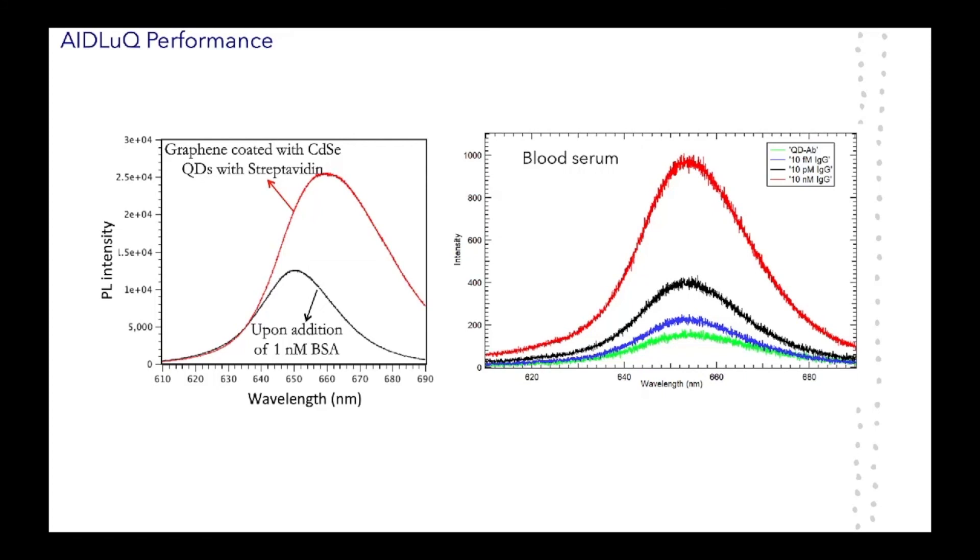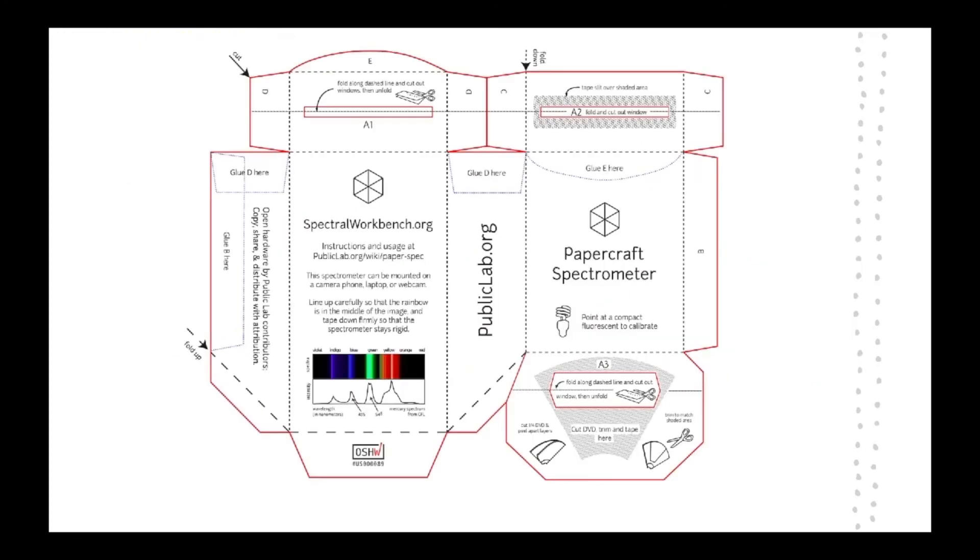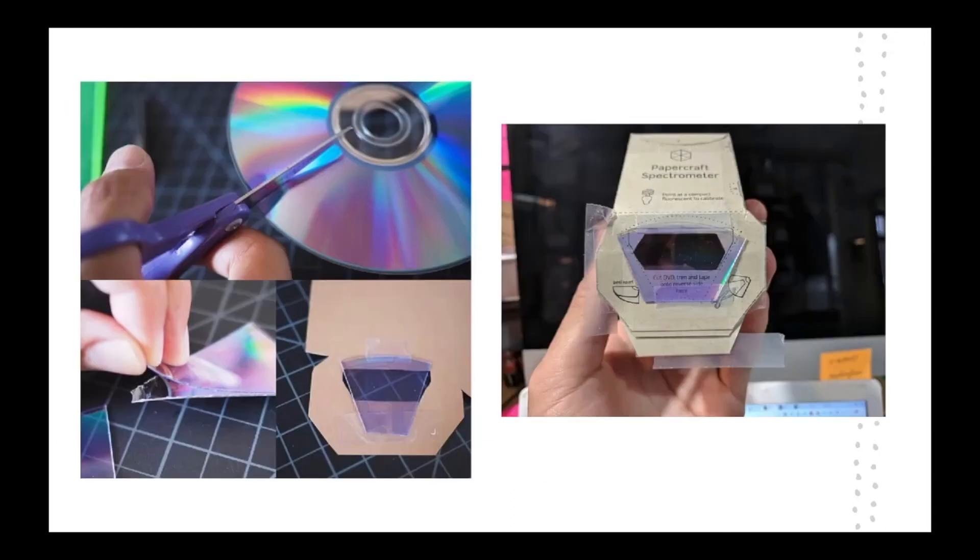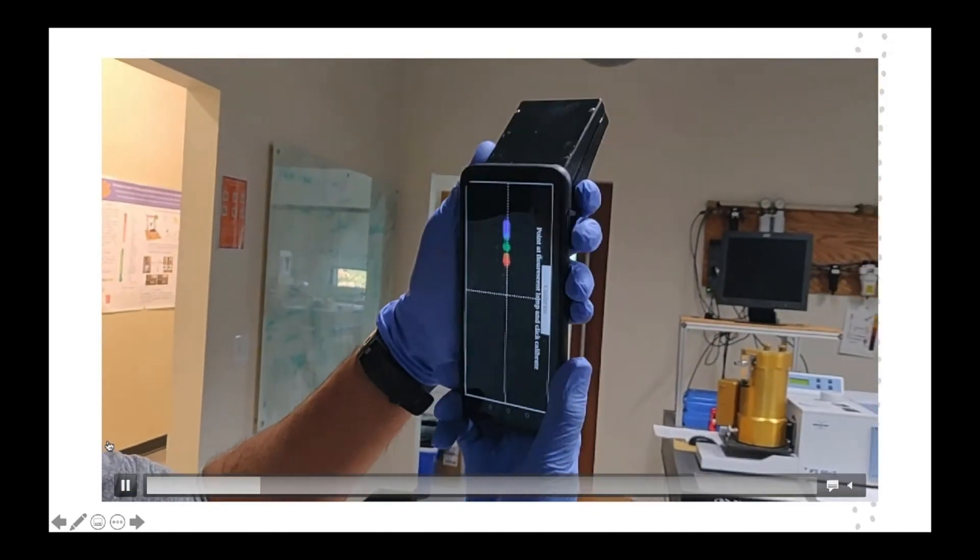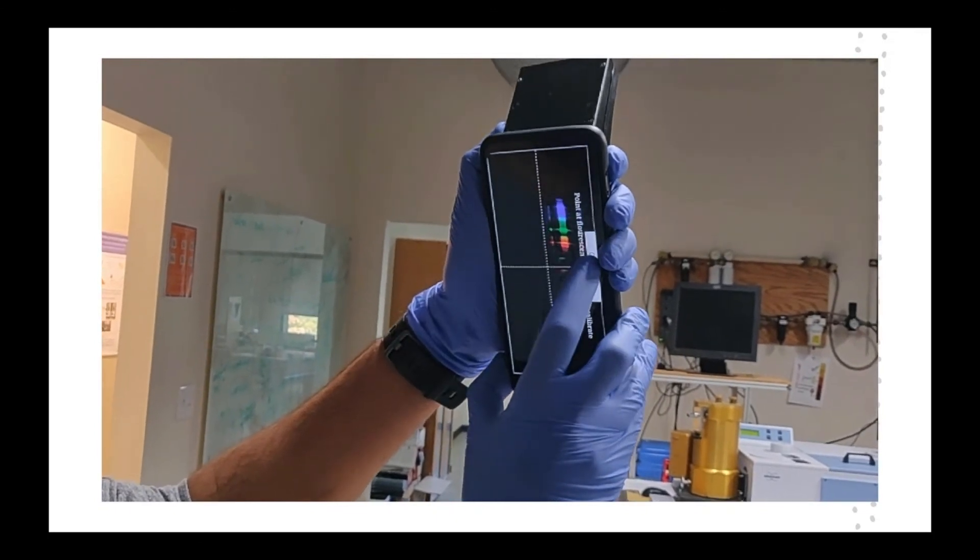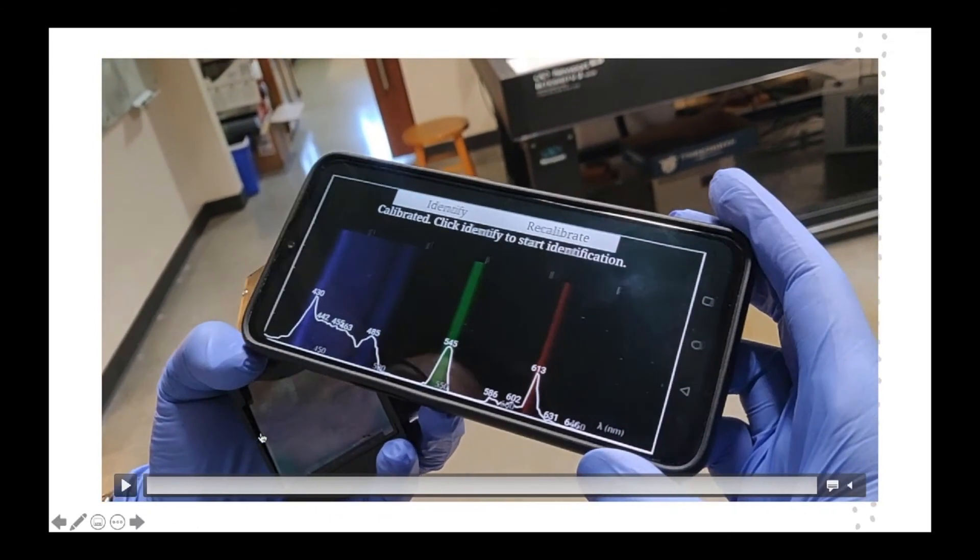We also tested this in a complex environment like the blood serum. Our platform was able to selectively and sensitively detect IgG even in a complex environment like the blood serum. Now, how can we translate this to the smartphone? To do that, we used a papercraft spectrometer. All that you need to do is simply print this out and fold it into a spectrometer using a CD drive as the grating. Now, once you have built the spectrometer, you can calibrate using Light Analyzer app on Play Store and obtain the spectrum from any fluorescent lamp source. Once the spectral features are obtained, the app is now calibrated.